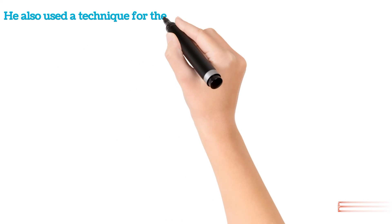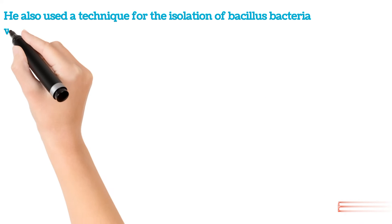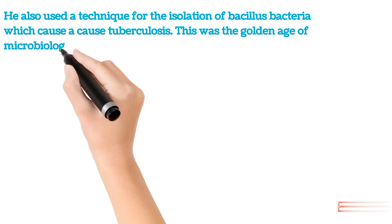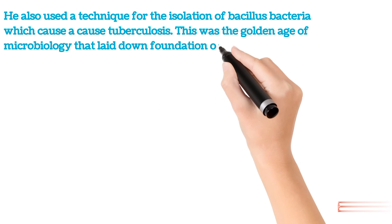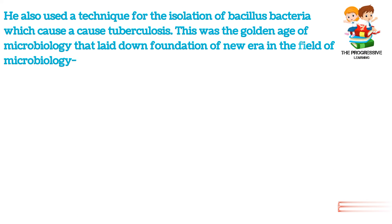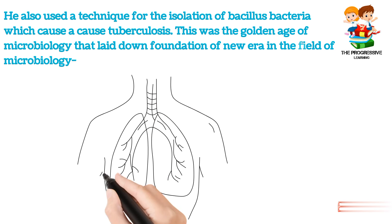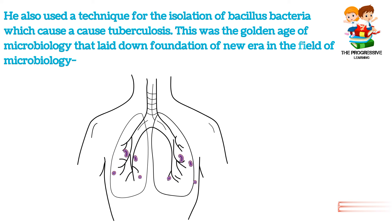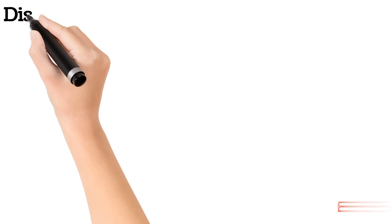Nutrient agar was also used for the isolation of bacillus bacteria which cause tuberculosis — Mycobacterium tuberculosis, which causes TB in human lungs. This was the golden age of microbiology that laid down the foundation of a new era in the field, because at that time TB was considered the worst chronic disease. When Koch developed a technique for the isolation of bacillus bacteria, that time period was considered the golden age of microbiology.